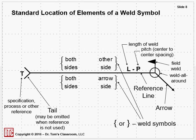Then if the weld is not continuous, you may have L-P where L is the length of the weld and P is the pitch or center-to-center spacing. I'll show you that a little bit more in an example here shortly.